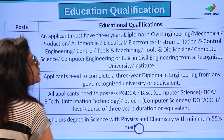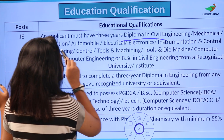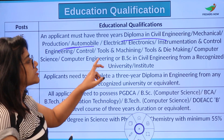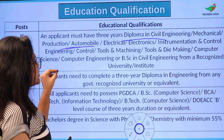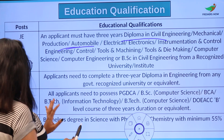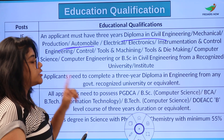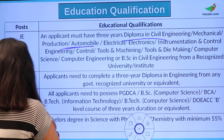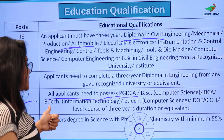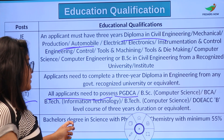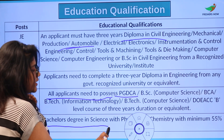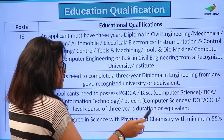The educational qualification details are as follows. For the JE post, the applicant must have a three-year diploma in Civil, Mechanical, Production, Automobile, Electrical, Electronics, Instrumentation and Control Engineering, Computer Science, or Computer Engineering, or a BSc in Civil Engineering from a recognized university or institution. For DMS, applicants need a three-year diploma in engineering from any government-recognized university. For JE IT, applicants need PGDCA, BSc Computer Science, BCA, B.Tech with Computer Science, or a DOE 'A' level or ACC B-level course of three years duration. For CMA, a bachelor's degree in Science with Physics and Chemistry with a minimum of 55 marks is required.